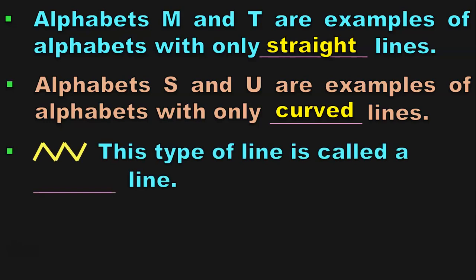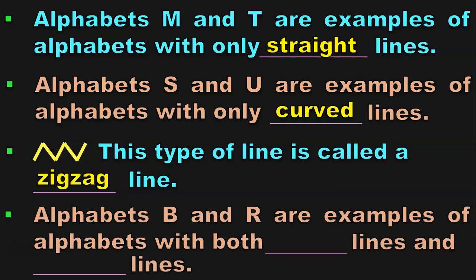This type of line shown in the figure is called a zigzag line. Alphabets B and R are examples of alphabets with both curved lines and straight lines. You can observe that they are made up of both curved lines and also straight lines.